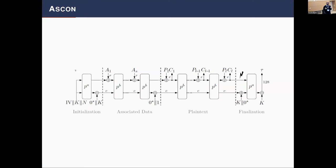Classical AEAD schemes don't consider faults because they assume the implementation will be protected. Even without targeting key recovery, we can forge ciphertexts to break integrity. For ASCON, a sponge construction, we can inject a fault inside the state that doesn't affect the ciphertext, then deduce the ciphertext value corresponding to that fault, which breaks integrity.